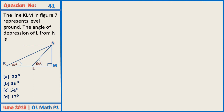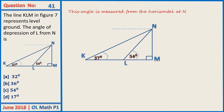Question 41 reads: the line KLM in figure 7 represents level ground. The angle of depression of L from N is measured from the horizontal at N, and this is the angle indicated by the blinking arc.